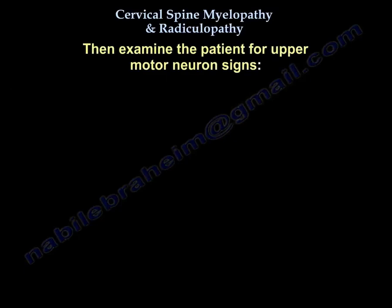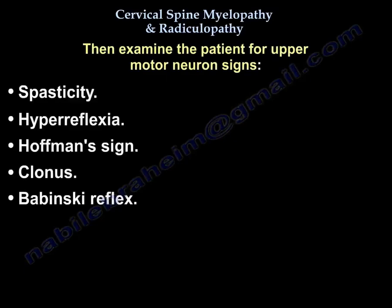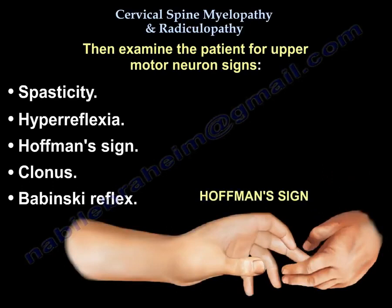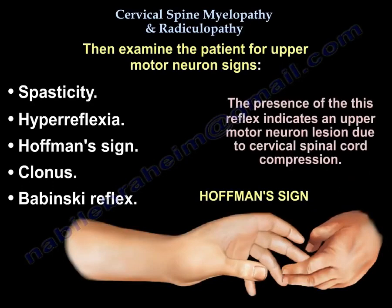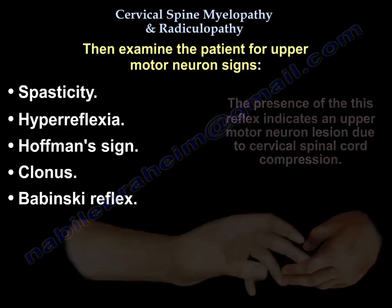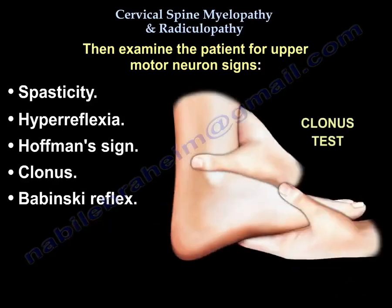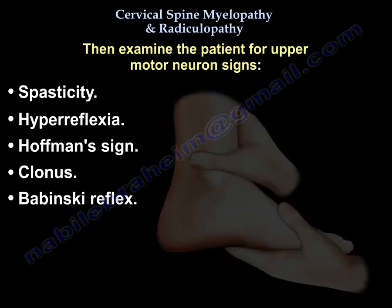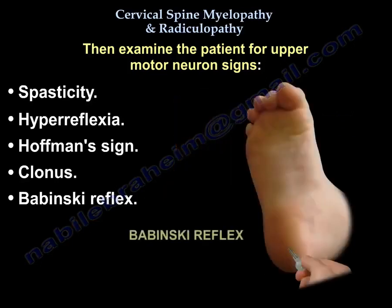Ask them about neck pain and stiffness and if they feel unstable when they walk. Then examine them for upper motor neuron signs — for spasticity, for hyperreflexia, for Hoffmann sign. The presence of this reflex indicates an upper motor neuron lesion due to cervical spinal cord compression, as well as clonus and Babinski test.